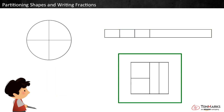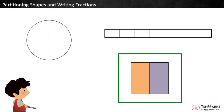Finally, look at the square. Are these pieces the same size? They are not the same shape, so it's hard to tell. Think about partitioning it one part at a time. The shape is broken into two equal halves. The left half is broken into two equal parts, and the right half is also broken into two equal parts.